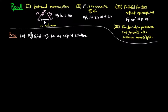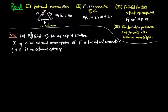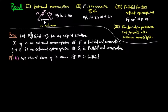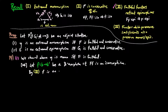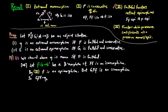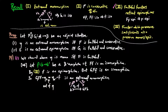We can now show the following result. Let FG be in an adjoint situation. Then (1) eta is an extremal monomorphism if and only if F is faithful and conservative. And (1') epsilon is an extremal epimorphism if and only if G is faithful and conservative, where extremal epimorphism is the dual definition to extremal monomorphism. For the proof of (1), we already showed eta is a monomorphism if and only if F is faithful. For the forward direction, we assume eta is an extremal monomorphism and let f be a B-morphism such that F∘f is an isomorphism. By (3) above, since F∘f is an epimorphism, f is an epimorphism since F is faithful. But G∘F∘f is an isomorphism since functors preserve isomorphisms.